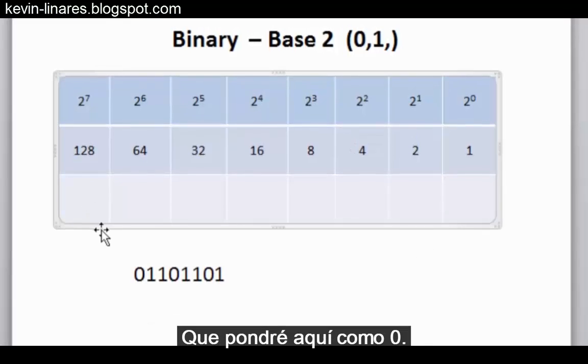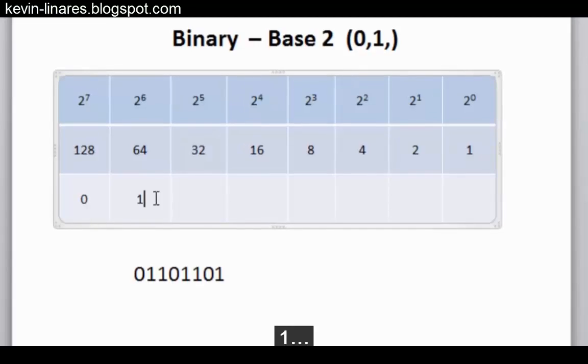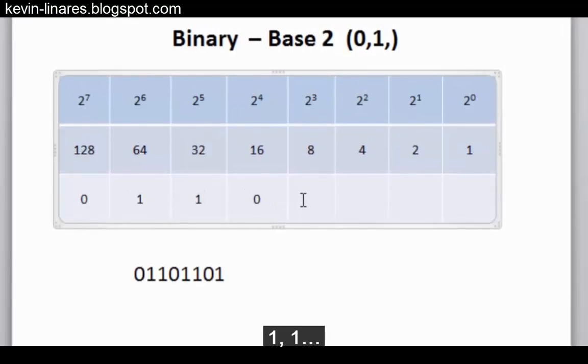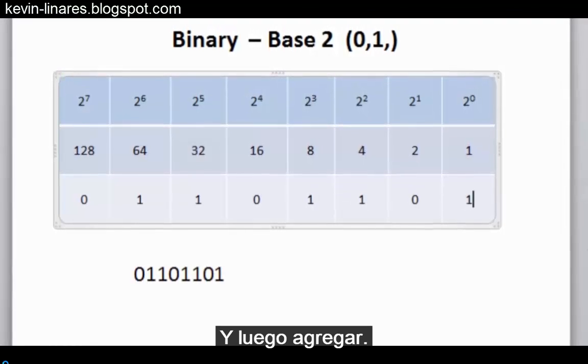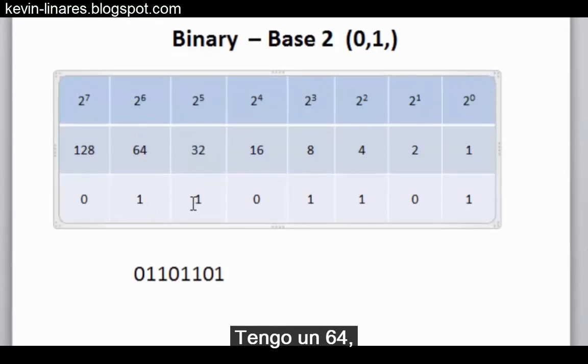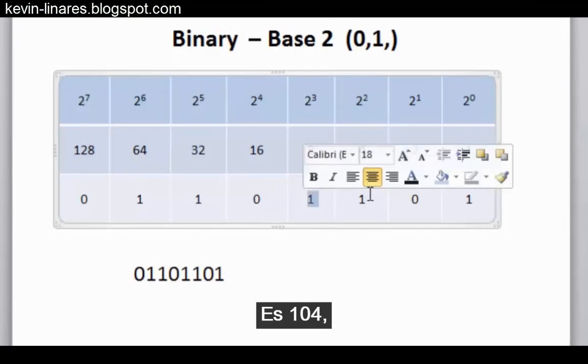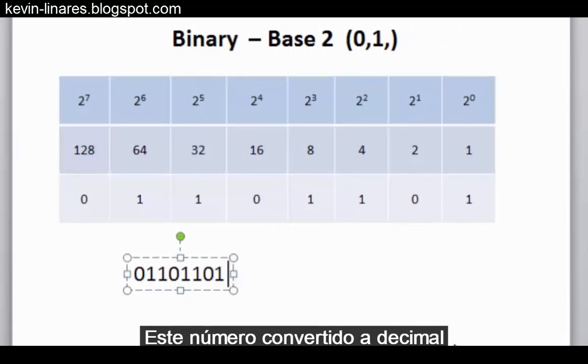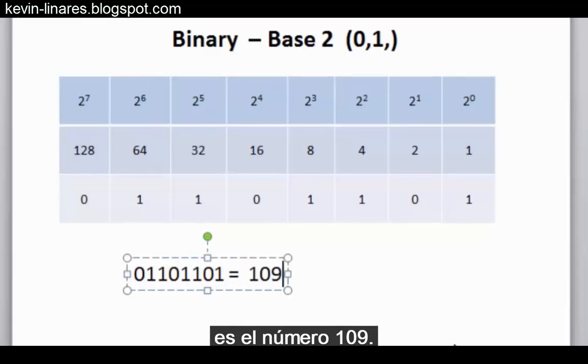I'll put it in here, 0, 1, 1, 0, 1, and then add it up. I have a 64, and I have a 32, 64 plus 32 is 96. Plus I have an 8, that makes 104. Plus 4 makes 108, plus 1 makes 109. This number converted to decimal is the number 109.